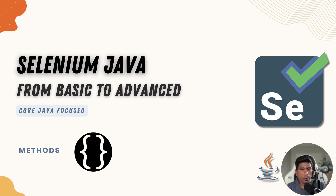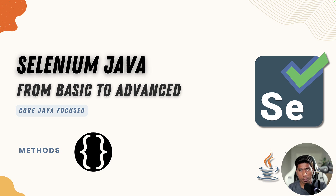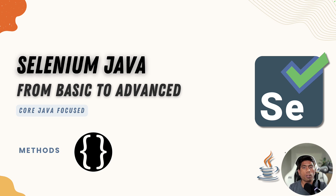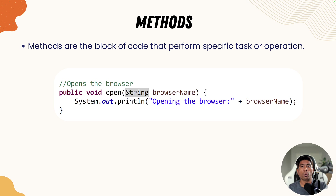Welcome to the next lecture of our course Selenium with Java. We have been talking about developing Selenium core from Java basic to advanced, and so far we have just talked about core Java concepts. In this session, we are going to talk about working with methods. I promised in our last lecture that we would be talking about methods in much more detail.